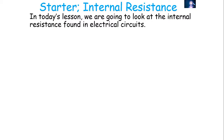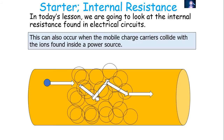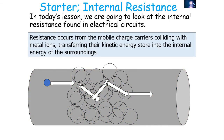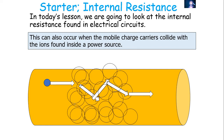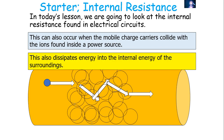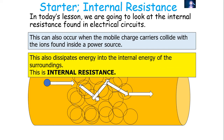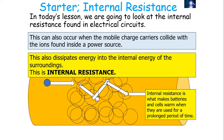In today's lesson we're going to look primarily at what internal resistance is in terms of electrical circuits. As previously discussed, resistance occurs when the mobile charge carriers collide with metal ions, transferring their kinetic energy store into the internal energy of the surroundings. This can also occur when the mobile charge carriers collide with ions found inside a power source, dissipating energy into the surroundings. This is what internal resistance is, and you can observe it as it's what makes batteries and cells warm when used for prolonged periods of time.